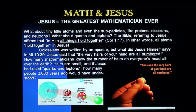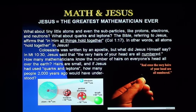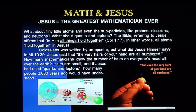The universe is large. What about tiny little atoms and even sub-particles like protons, electrons, neutrons? What about quarks and leptons? The Bible, referring to Jesus, affirms that in him, in Christ, all things hold together — Colossians 1:17. In other words, all atoms hold together in Jesus. And what did Jesus himself say? In Matthew 10, Jesus said that the very hairs of your head are all numbered. How many mathematicians know the number of hairs on everyone's head all over the earth? And if Jesus had used quarks and leptons, how many people 2,000 years ago would have understood what he was talking about?